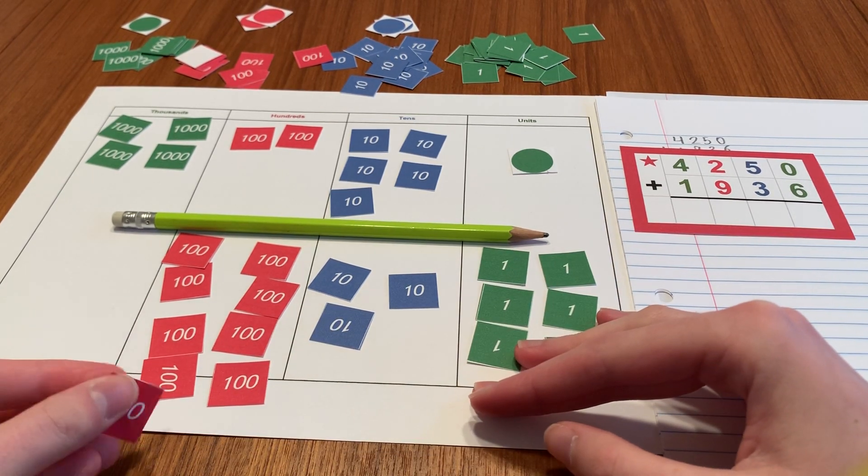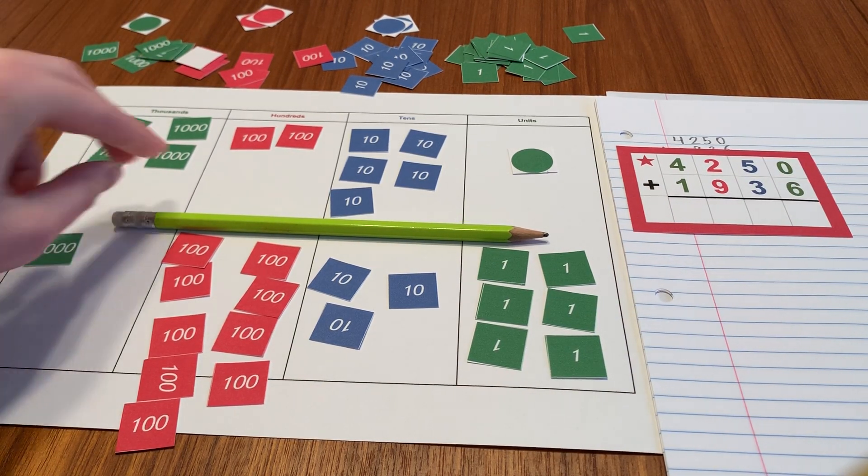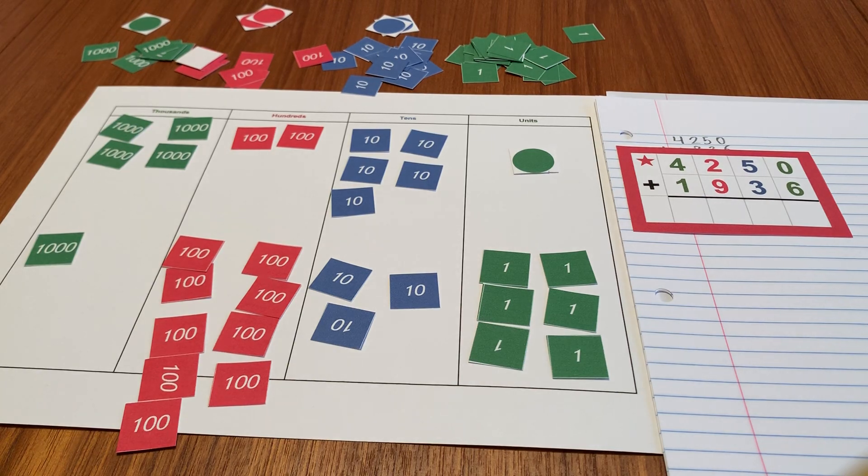There we go. Alrighty. And then finally, in my thousands place, I have one thousand. Nice and easy.